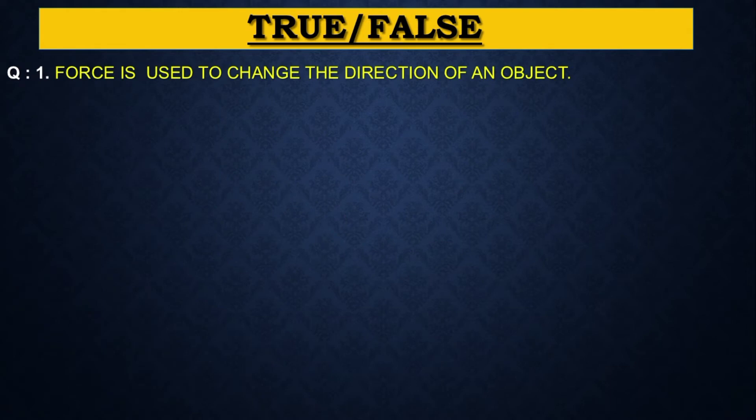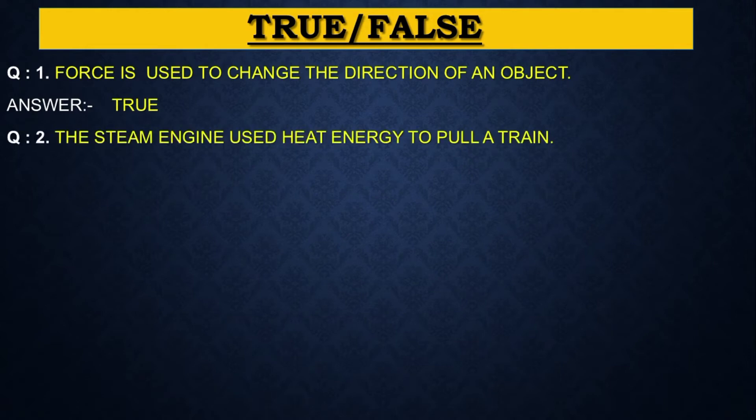True and false. Question 1: Force is used to change the direction of an object. Answer is true. Next question. The steam engine used heat energy to pull a train. Answer is true.